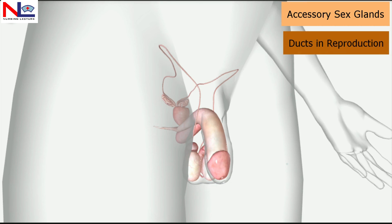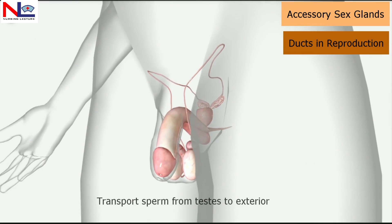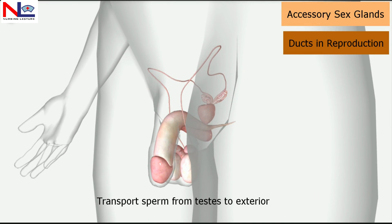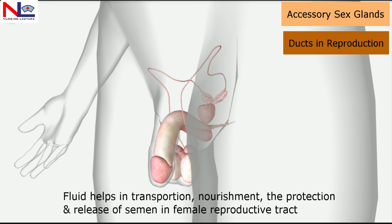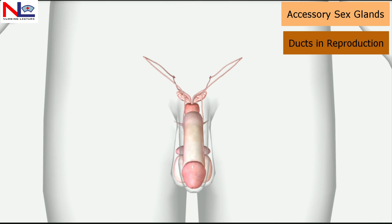So these are the three accessory sex glands in the male: the paired seminal vesicles, the single prostate, and the paired bulbourethral glands or Cowper's glands. In this video we have discussed the various ducts which transport sperm from the testes toward the exterior, and the various accessory glands which contribute the fluid part of semen, helping in transportation, nourishment, protection, and release of semen into the female reproductive tract.